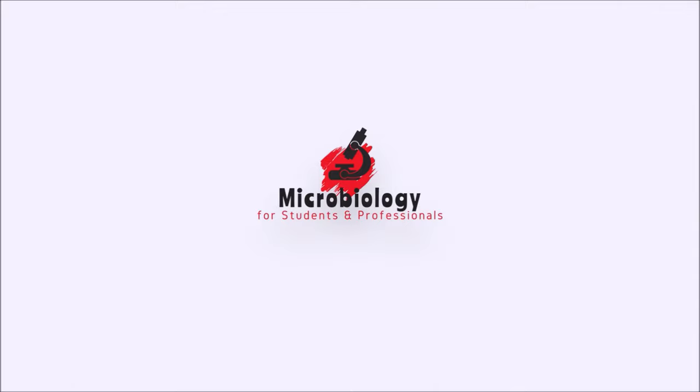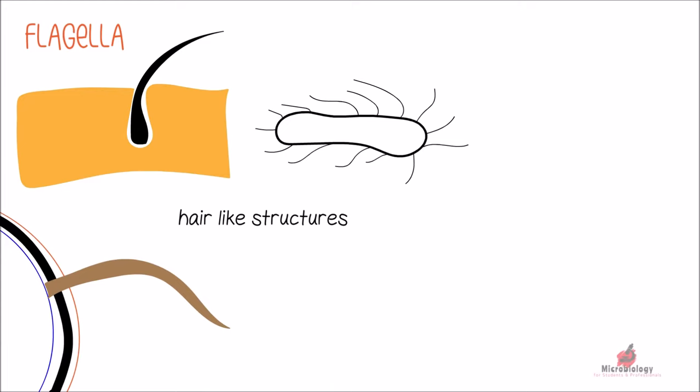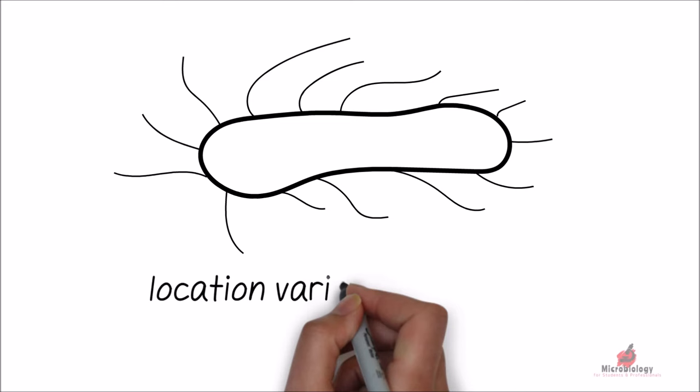Flagella are thin and hair-like structures. They come through the cell wall and mainly function in motility of bacterial cell. The location of the flagella on the bacterial cell wall varies depending on the species.